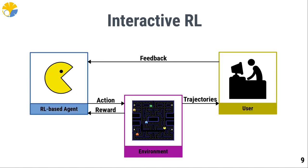In this figure, we can see the main components of an interactive RL application. We have an RL-based agent — our friend Pac-Man — that learns by interacting with its environment, which includes ghosts and pills, from which the agent usually gets a reward. We also have a human user who receives trajectories of the agent as input, so she or he can evaluate its performance and give feedback to the agent. There are different types of feedback — it could be a critique, saying whether an action performed in a given state is good or bad.